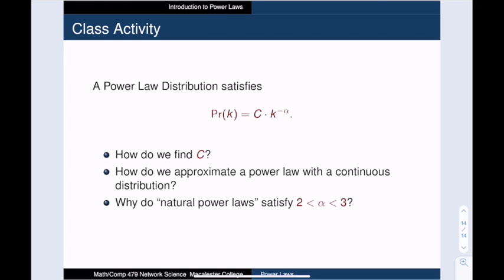Finally, we will tackle the big question. Why is it that natural power laws have exponents between 2 and 3? What is so special about this range? And what behavior does this allow that is actually helpful for organizing a complex system?